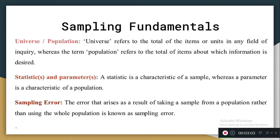There are sampling fundamentals you must know when studying sample size estimation. The first concept is population, also called universe, which refers to the total of items or units in any field of inquiry — the total items about which information is desired. In nursing we focus on the population. A statistic refers to the characteristic of your sample, whereas a parameter refers to the characteristic of your population.